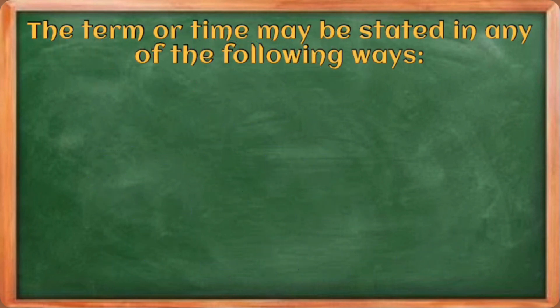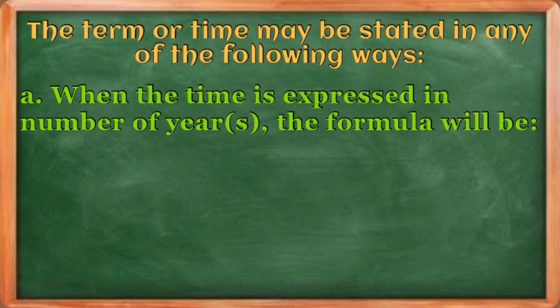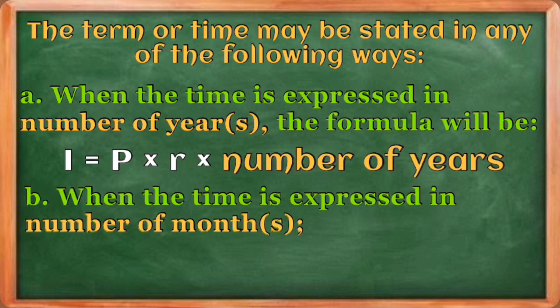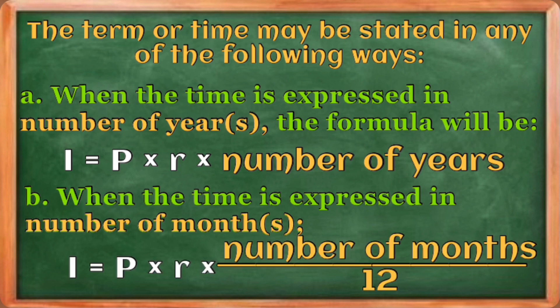As mentioned, time T is usually expressed in years. If the number of months is given, you can convert it using the formula: number of months divided by 12.